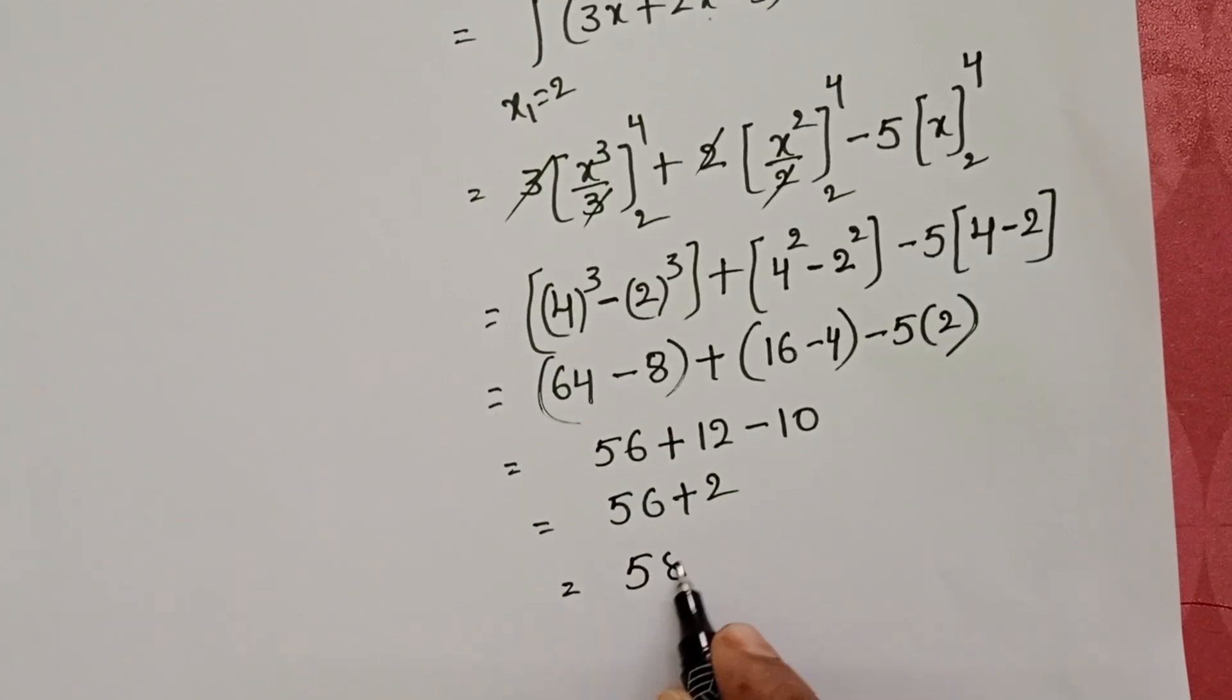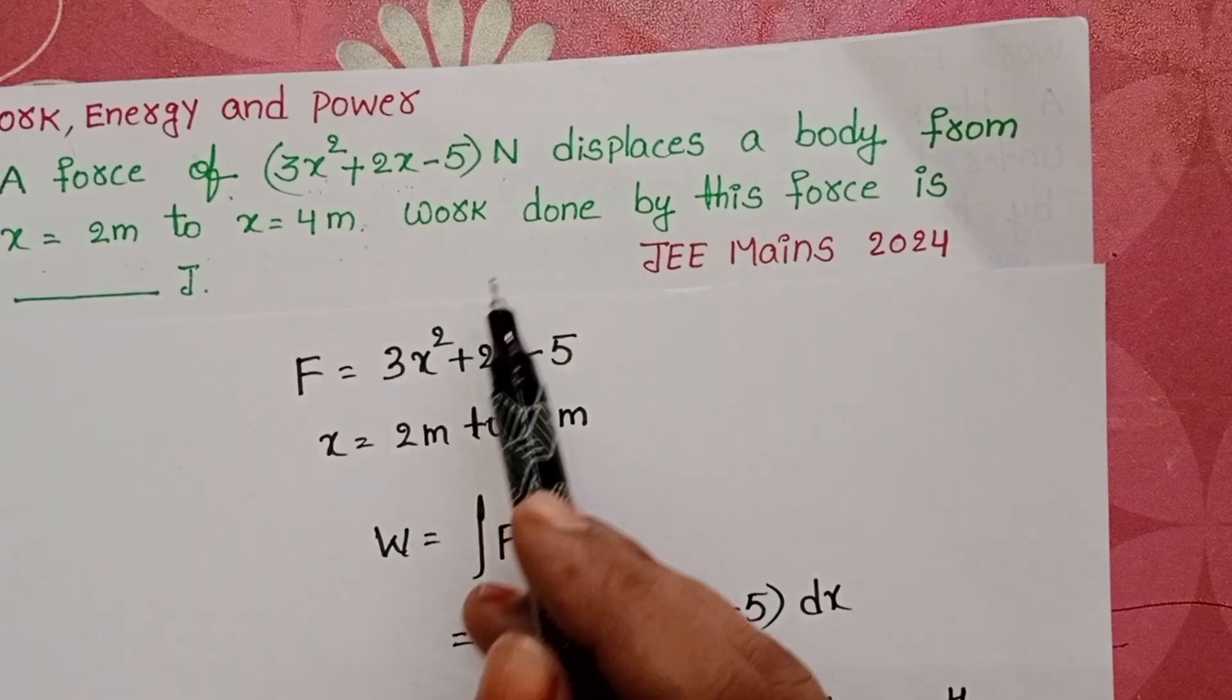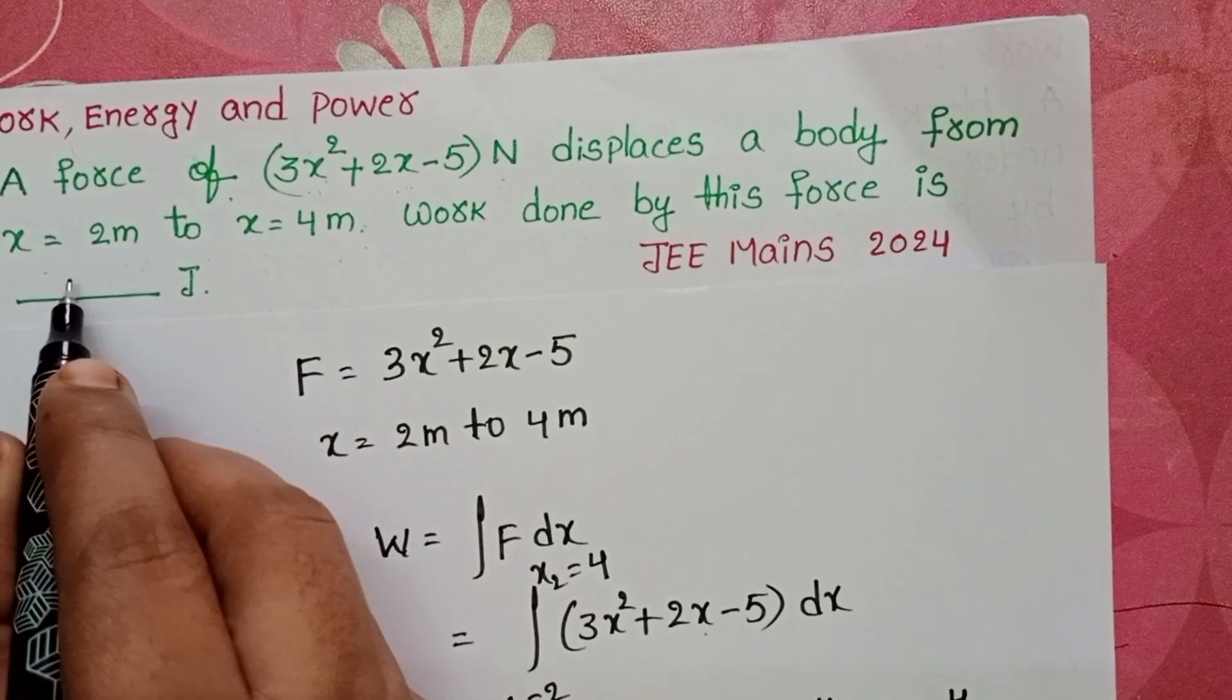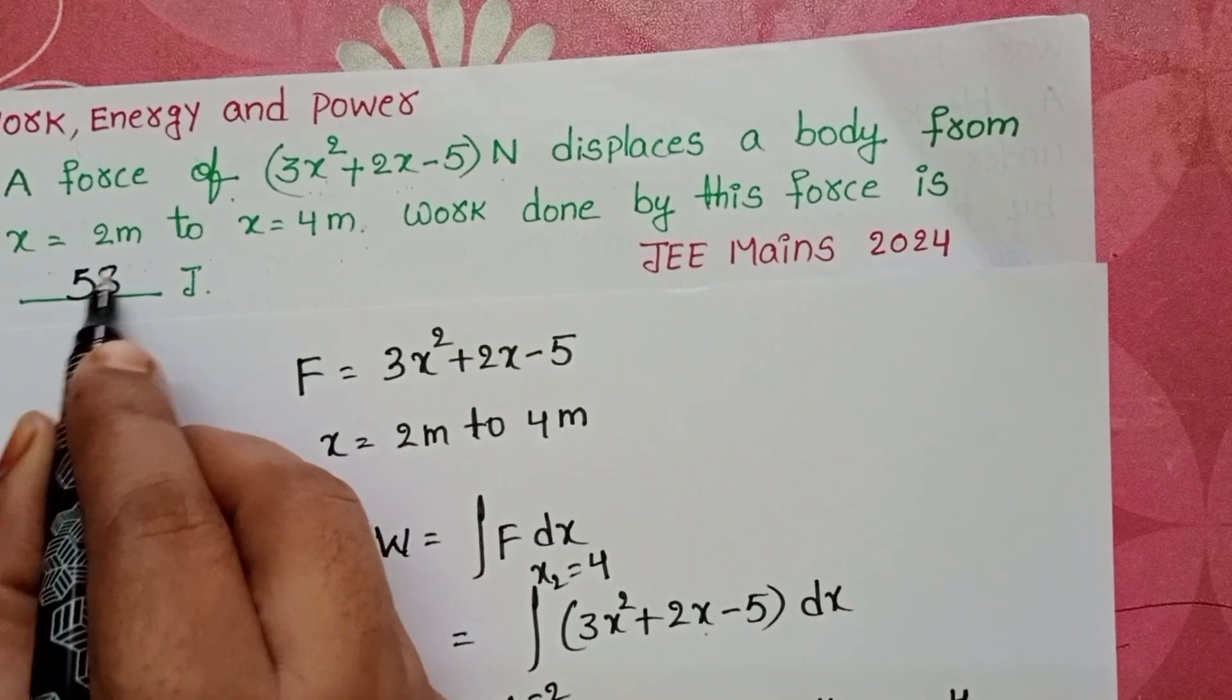So, 58 joules. Work done by the force is equals to 58 joules.